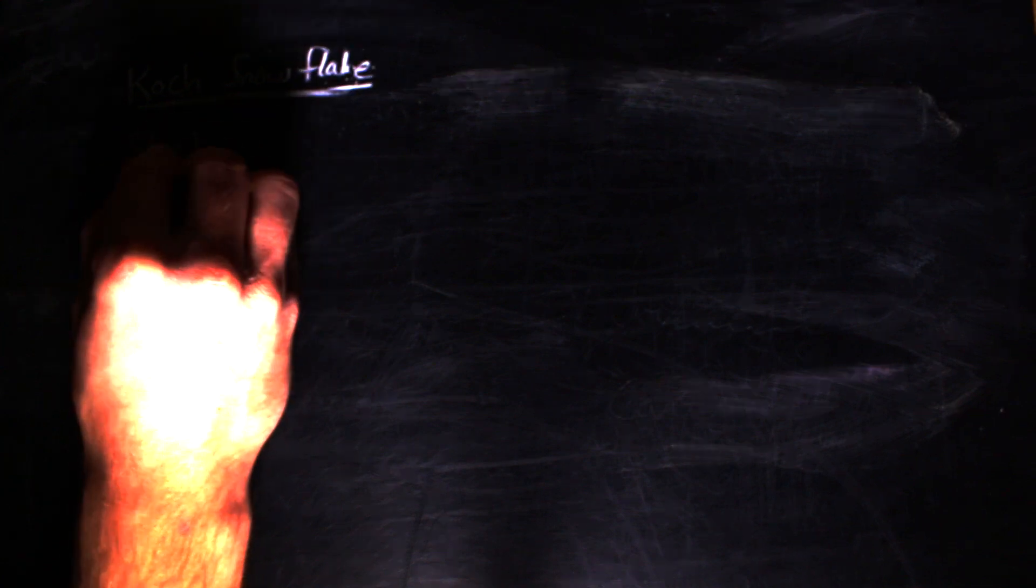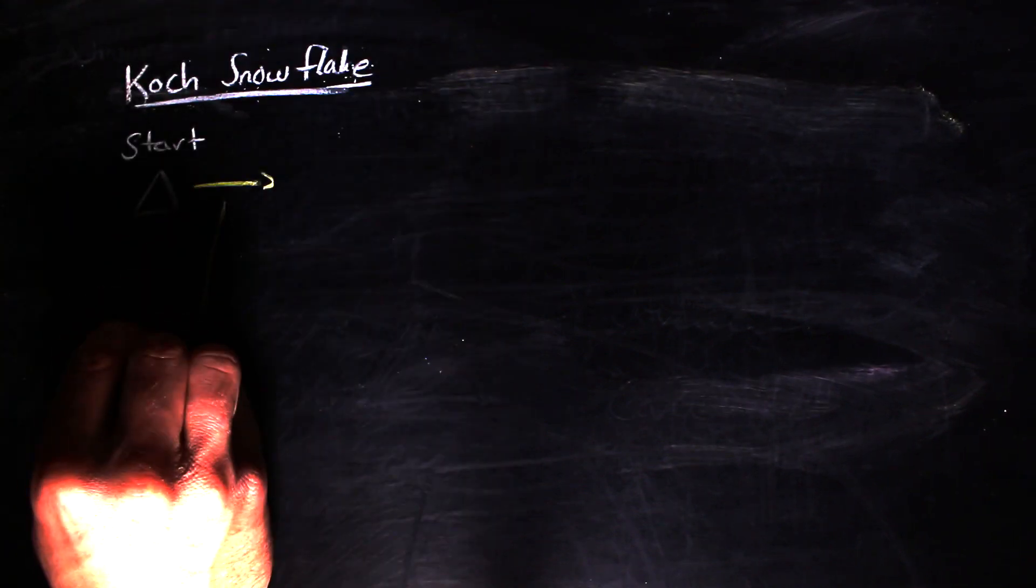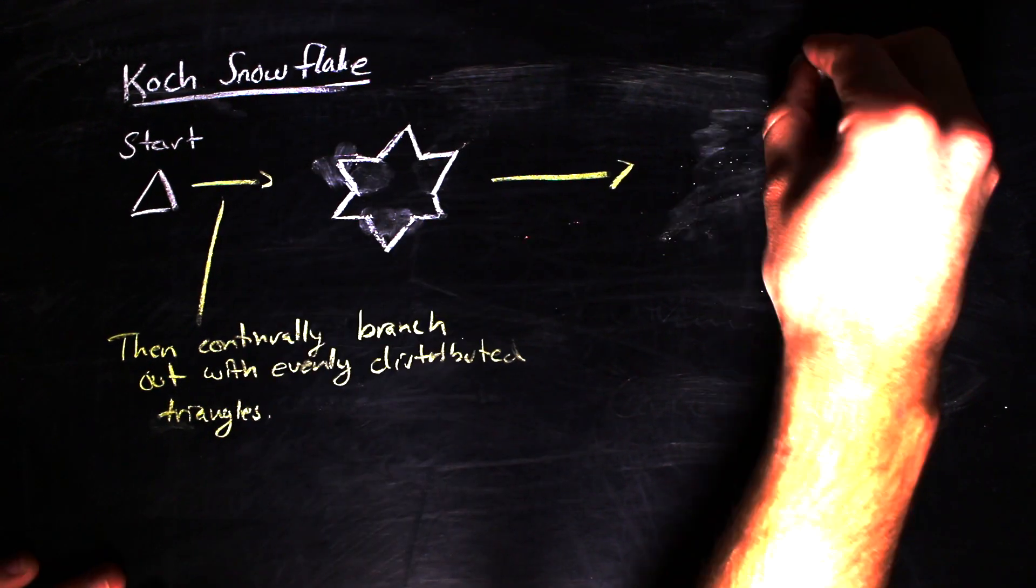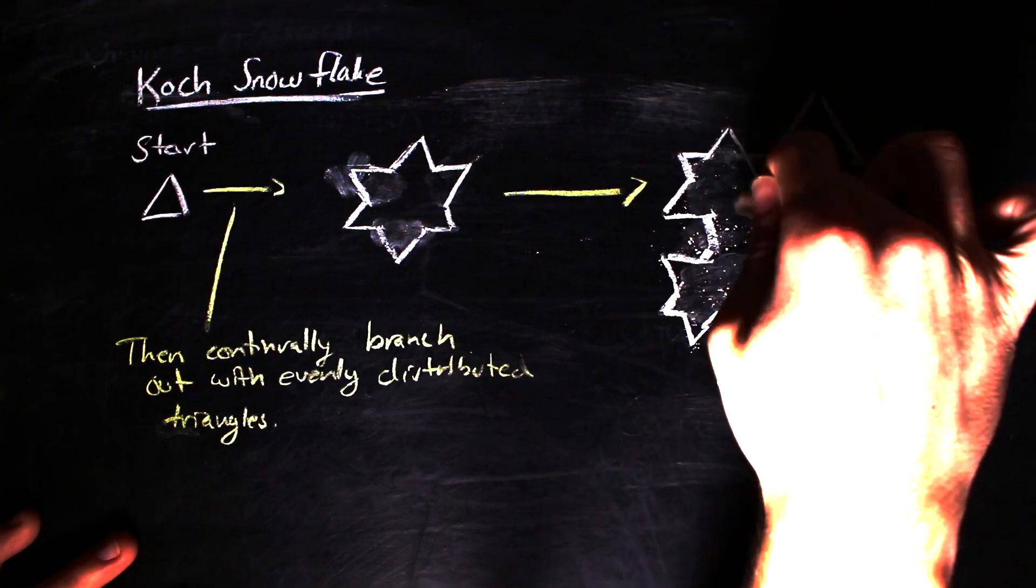So let's briefly talk about how you construct the Koch snowflake. Without going into too much detail, the Koch snowflake is formed by taking an equilateral triangle and then continually branching out from that triangle with smaller equilateral triangles. Here are the first three iterations of this construction.